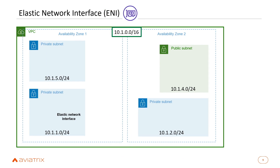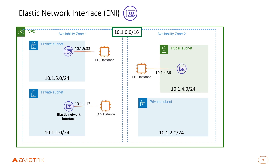Let's talk about elastic network interfaces. Think of an ENI as a network card for your EC2 instance. When you launch an EC2 instance, an ENI is automatically created and attached, and it receives an IP address from the subnet range. You can also create your own ENIs, assign them an IP address, and decide which EC2 instance to attach them to.